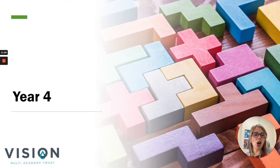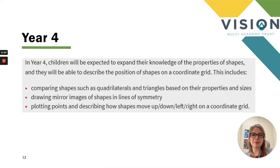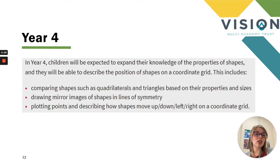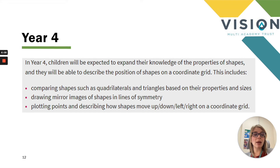Moving on to year four. In year four, children will be expanding their knowledge of properties of shape and describing the positions of shapes on a coordinate grid. This includes comparing shapes such as quadrilaterals and triangles based on their properties and sizes, drawing mirror images of shapes in lines of symmetry, and plotting points and describing how shapes move on a coordinate grid.